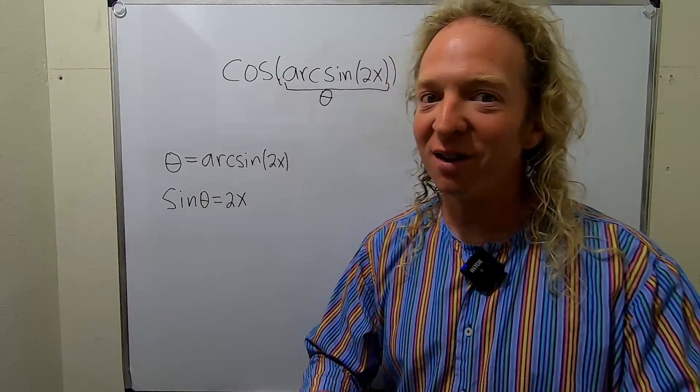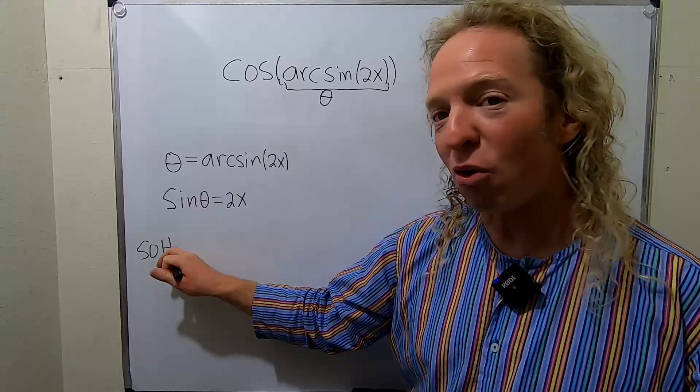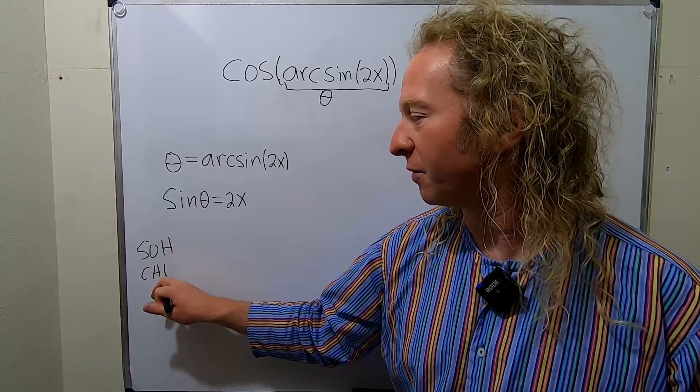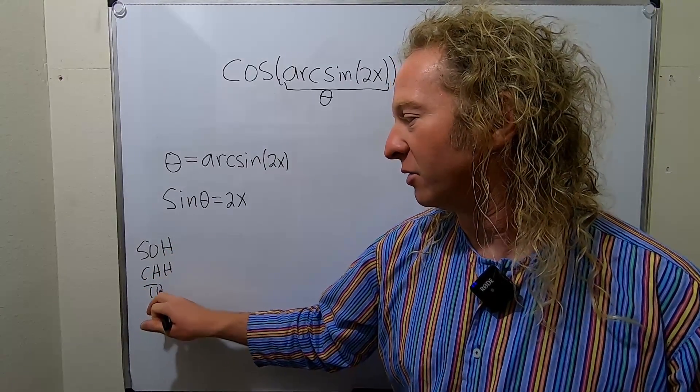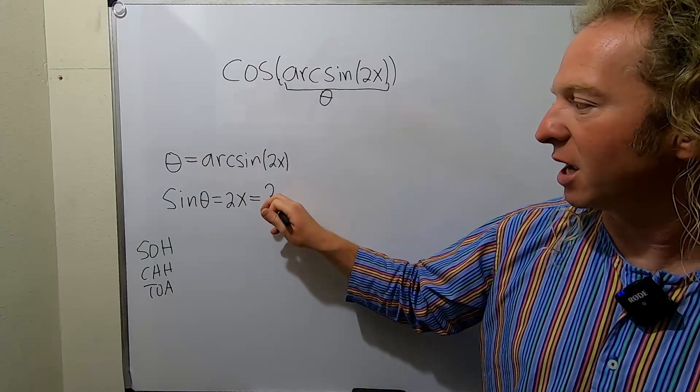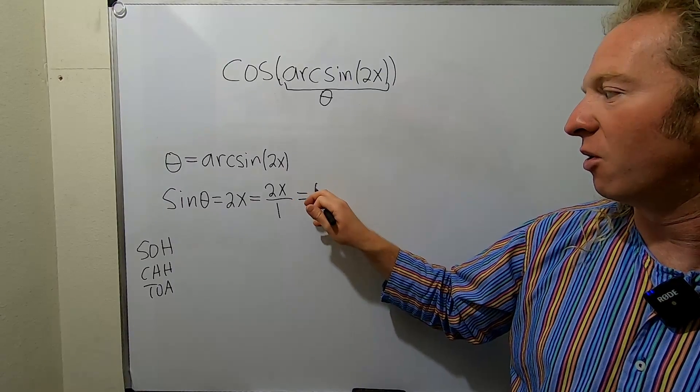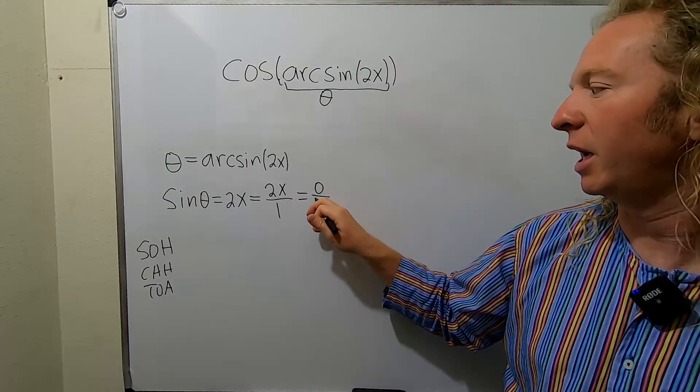Now we use an ancient proverb. I'm not sure if that's what it's called, but it's SOHCAHTOA. So sine is opposite over hypotenuse. So the trick is to write this as 2x over 1. So then it's O over H.